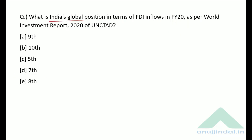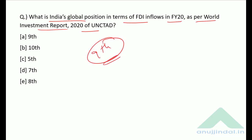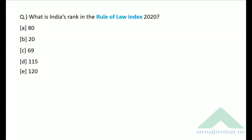What is India's global position in terms of FDI inflows in financial year 2020 as per the World Investment Report 2020? India's global position is ninth. Number one is the USA and number two is China.